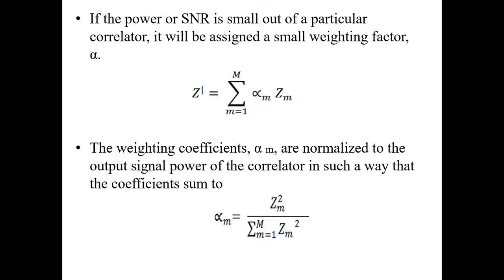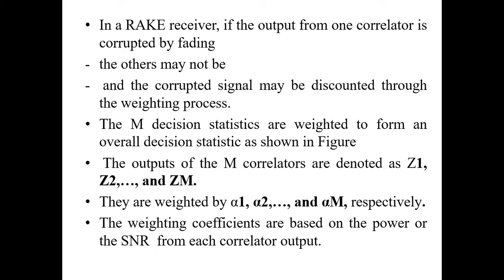Finally, we get a good reliable performance. The detection is done using decision statistics — the decision is taken out with a statistical method upon observing through individual correlators, and finally the weights are updated. The weighted coefficients are denoted by alpha 1, alpha 2, up to M respectively, based on the setup with our RAKE receiver. The weighting coefficients are based on the power level to get the best SNR.